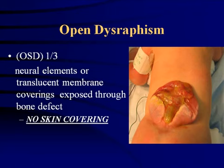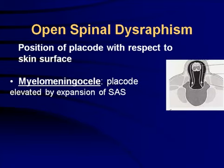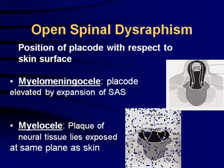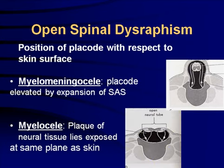An open neural tube defect has a translucent membrane with no skin covering. These are typically separated into myelomeningocele, where the placode is elevated by the expansion of the subarachnoid space, or the myelocele, which is a plaque of neural tissue that lies exposed at the same plane as the skin. Neither of these are skin covered, and both are associated with Chiari malformations.